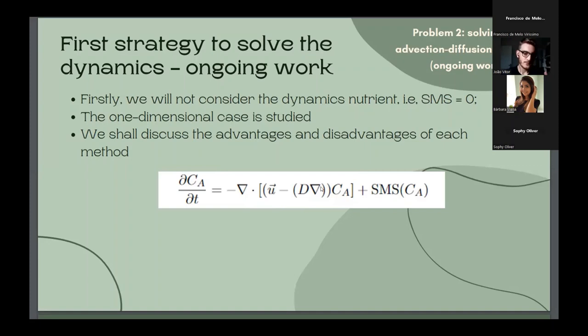The first step I'd taken was to consider source minus sink zero to solve this equation, and to turn it to a simpler model. I'd taken the one-dimensional case, and I studied three methods to solve this advection-diffusion equation that I will present in the next slide. And I will talk about the advantages and disadvantages of these three methods to solve the equation.